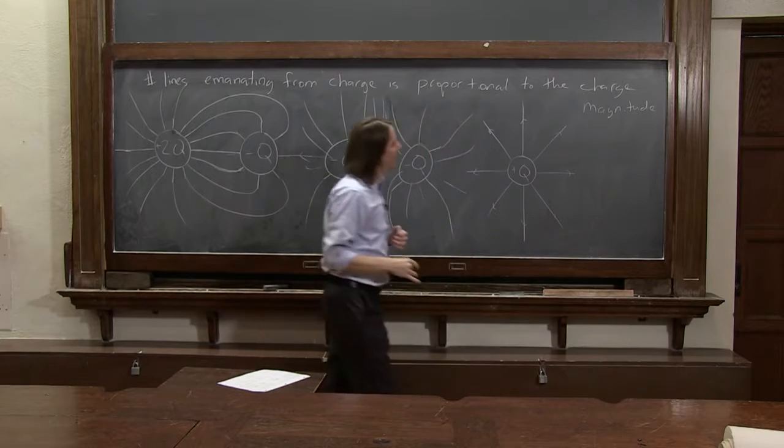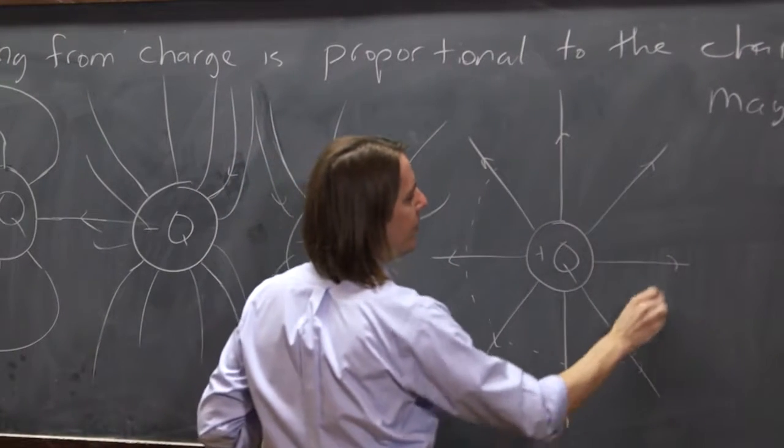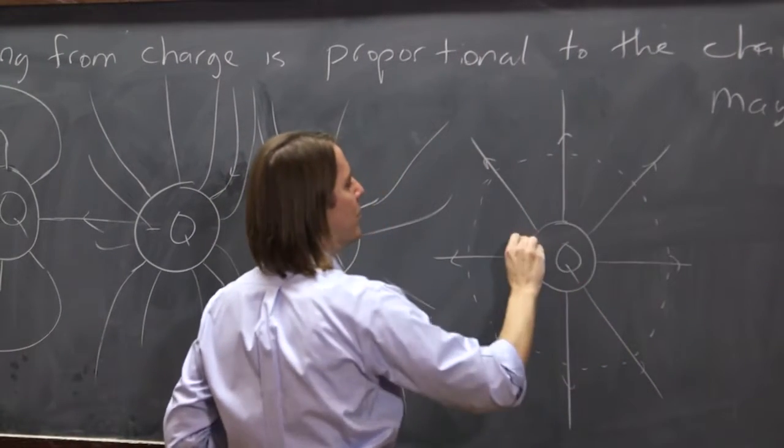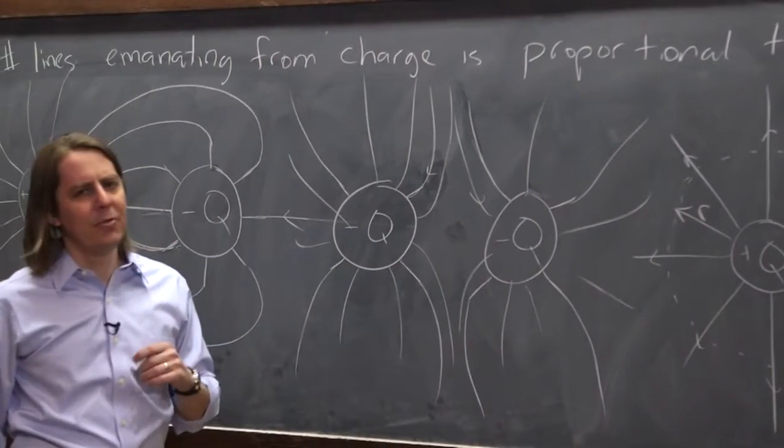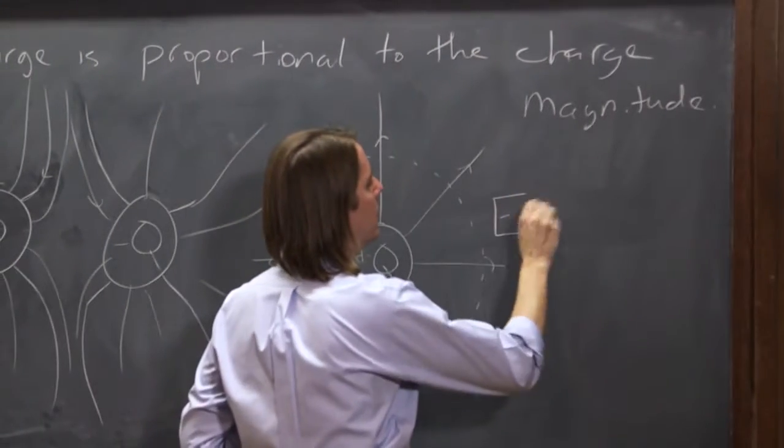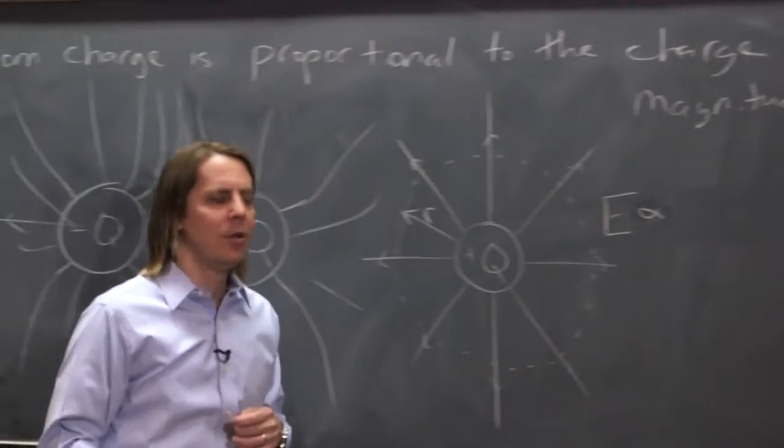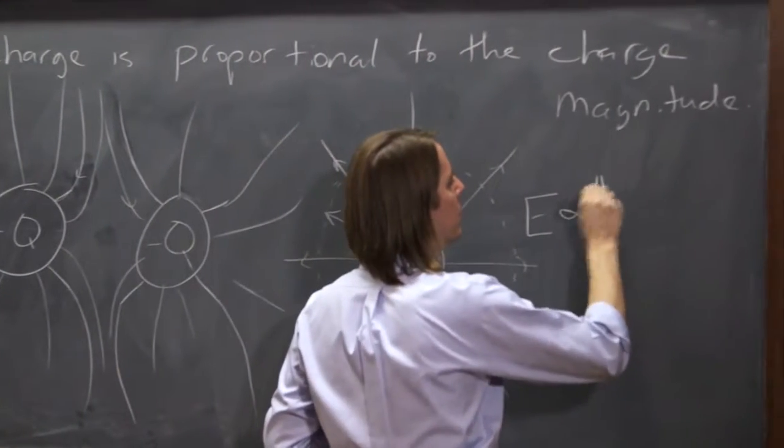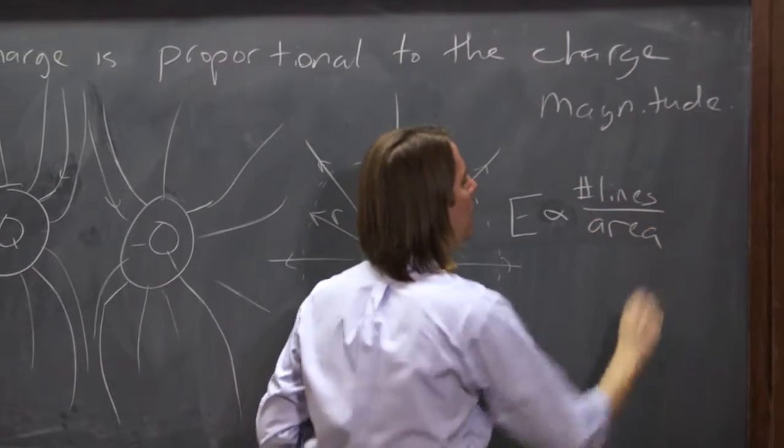We could ask ourselves, what is the electric field at some radius out R, right, in some sphere? Because we kind of said, we said that the field goes as the number of lines per unit area, right? So E is proportional to, we're not writing an equation, is just proportional to the number of lines per area.